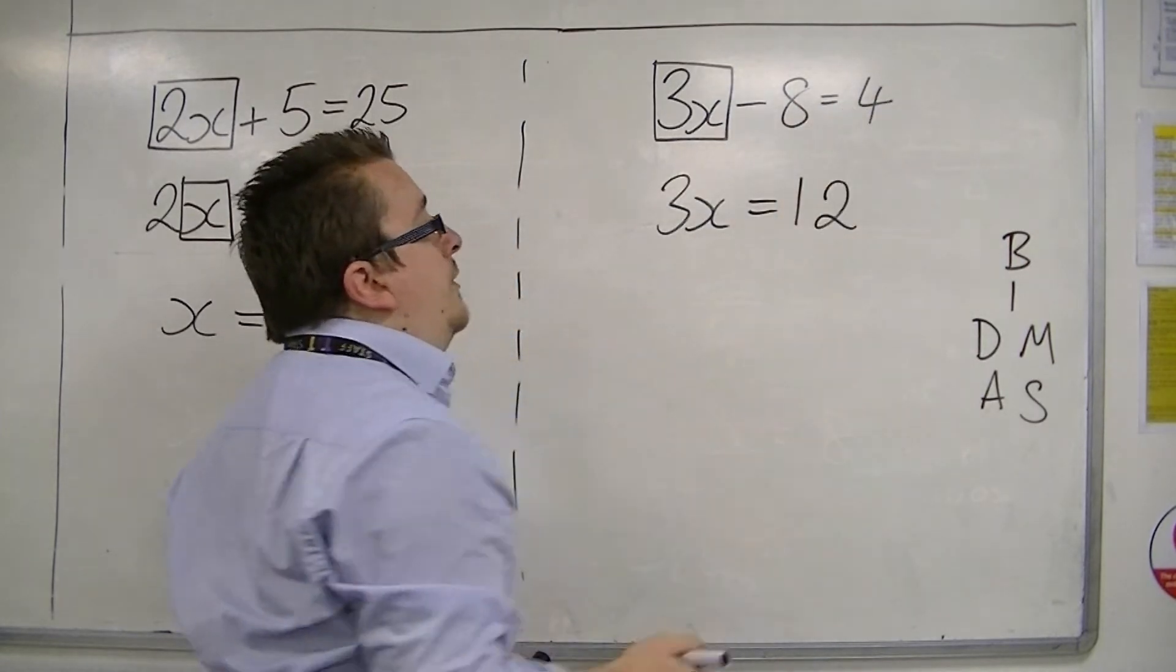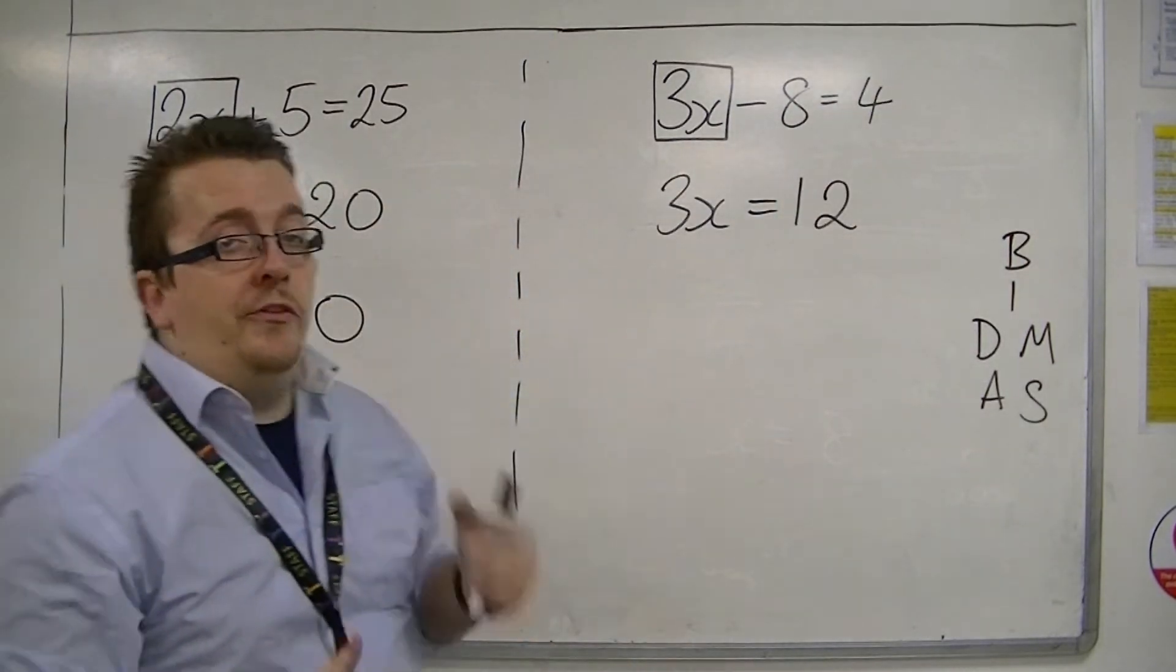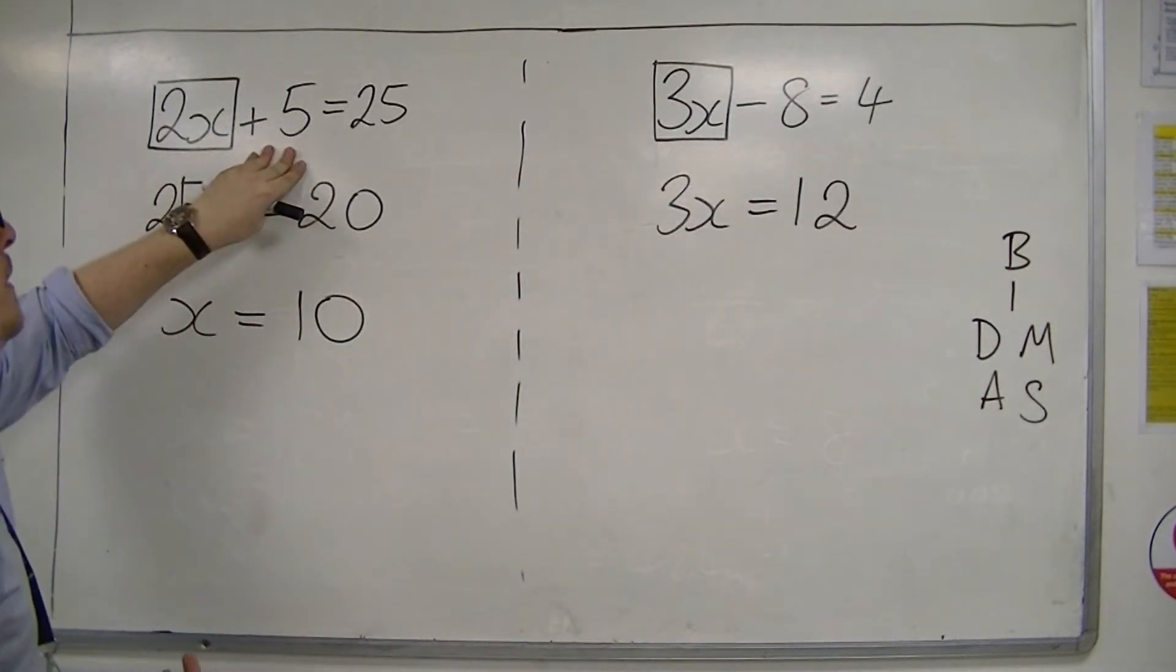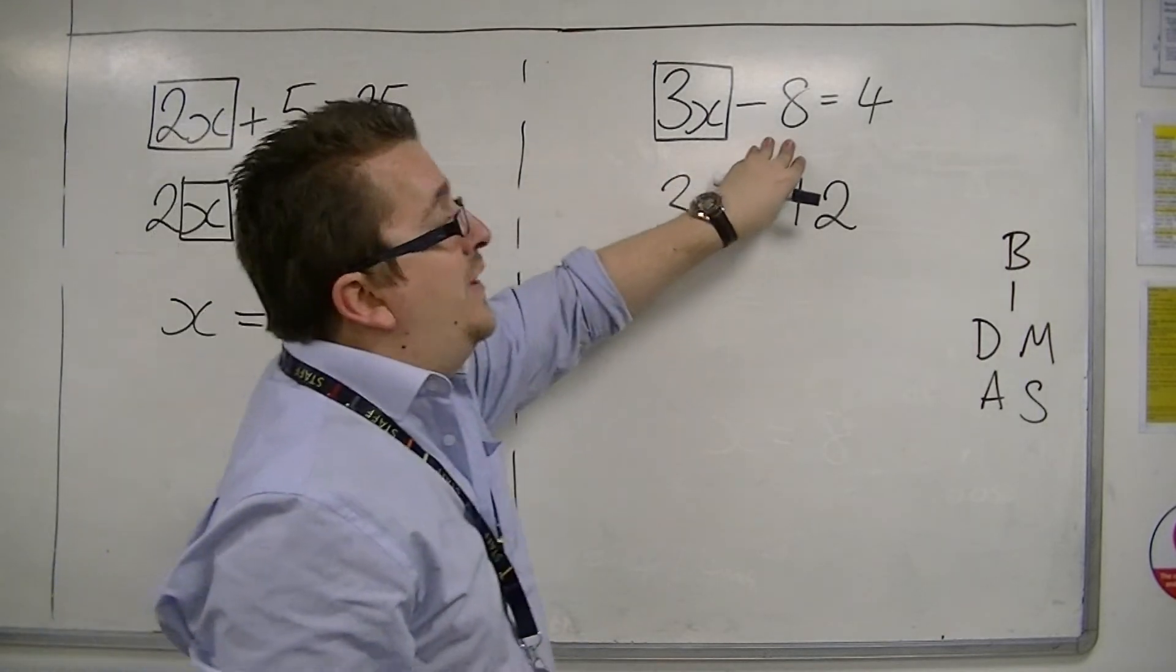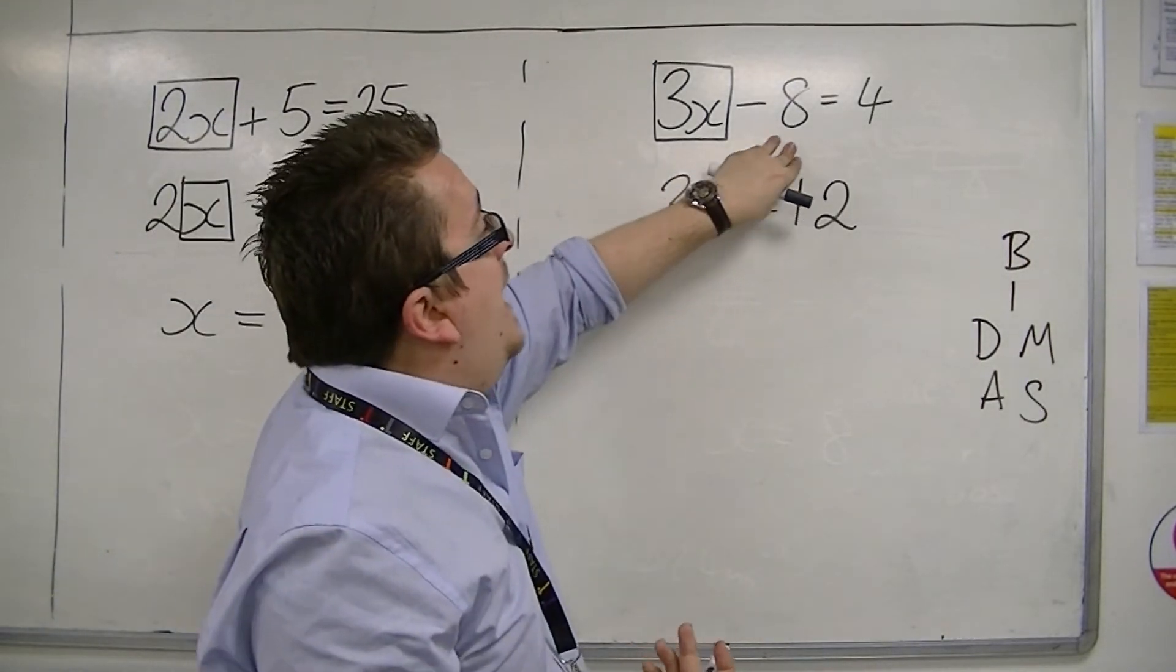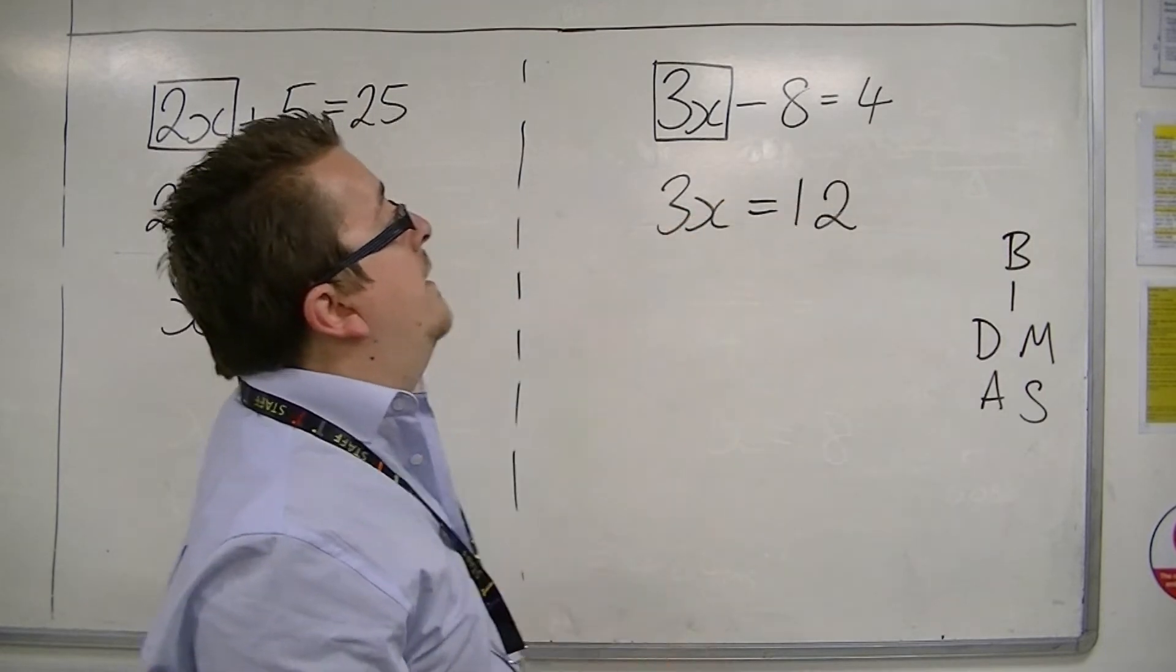12 take away 8 is 4. You can also see it as, because we subtracted 5 from both sides here, we're adding 8 to both sides. So we do the reverse operation. Add 8 to both sides and we get 12.